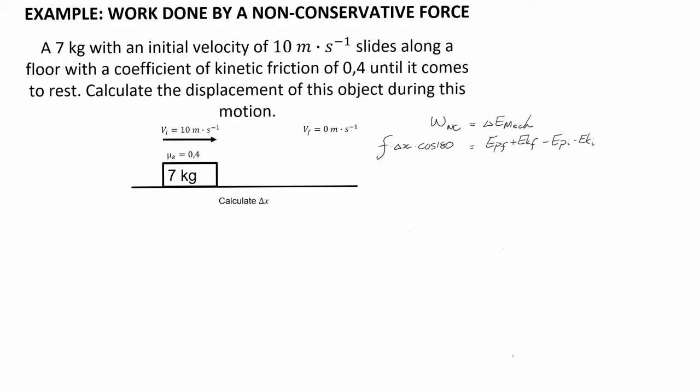An example of how the work done by a non-conservative force changes the mechanical energy of the system is seen here where a 7 kilogram object with an initial velocity of 10 meters per second slides along a floor with a coefficient of friction of 0.4 until it comes to rest. Calculate the displacement of this object during the motion.